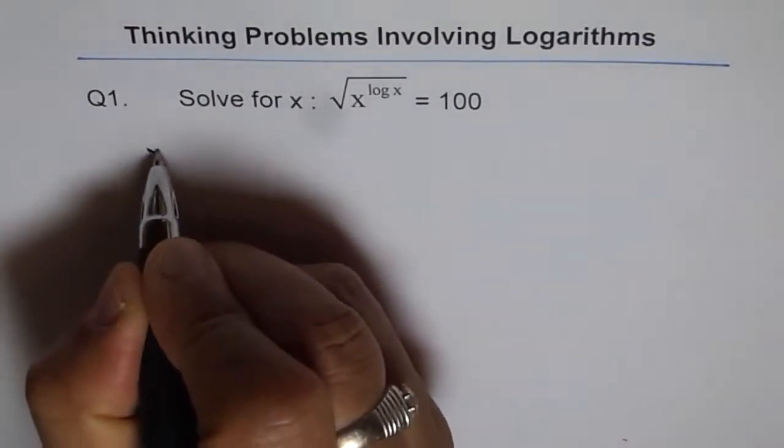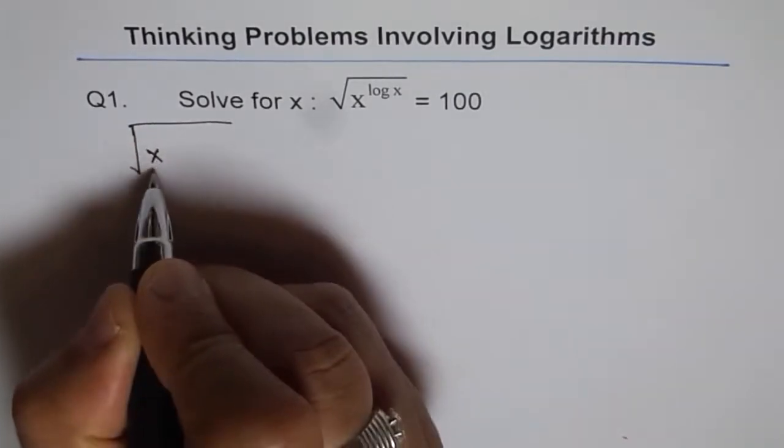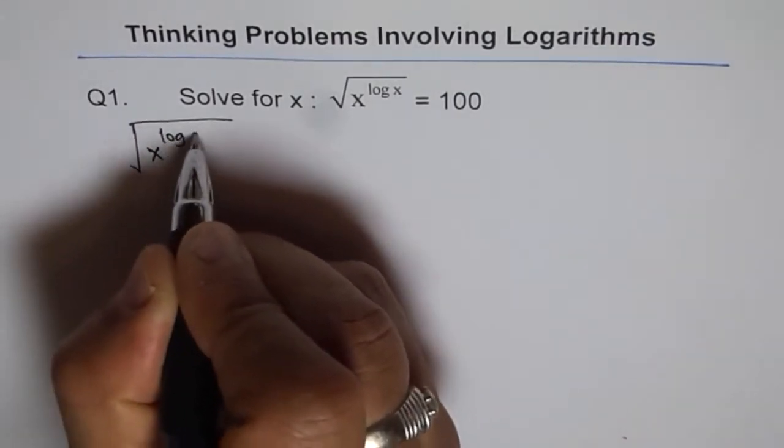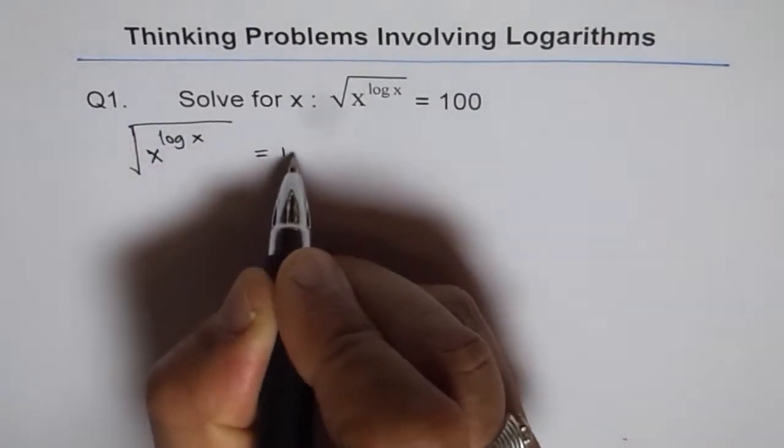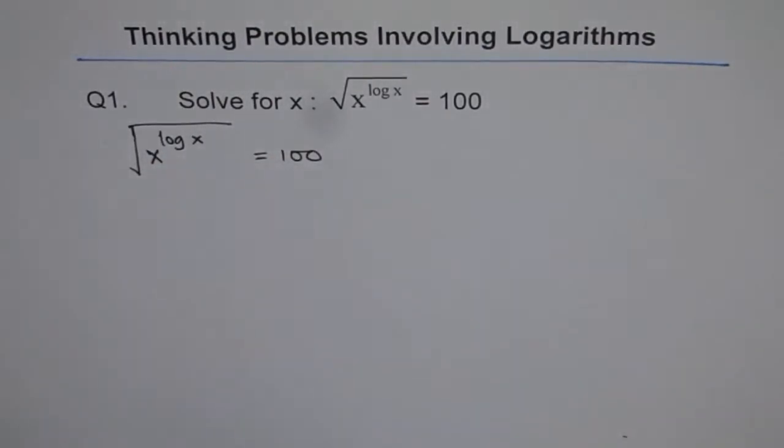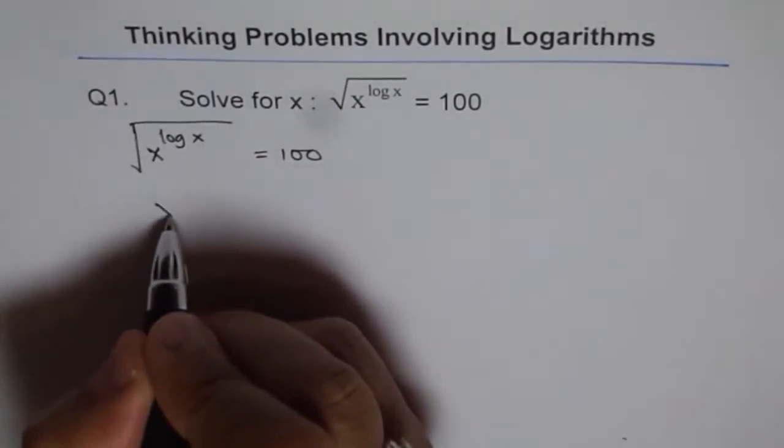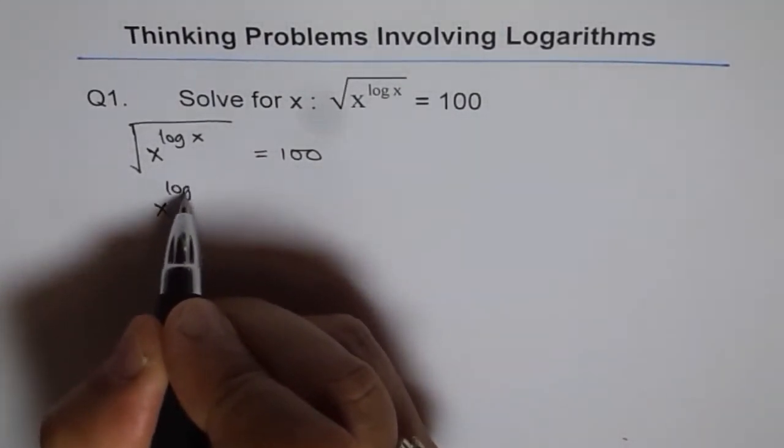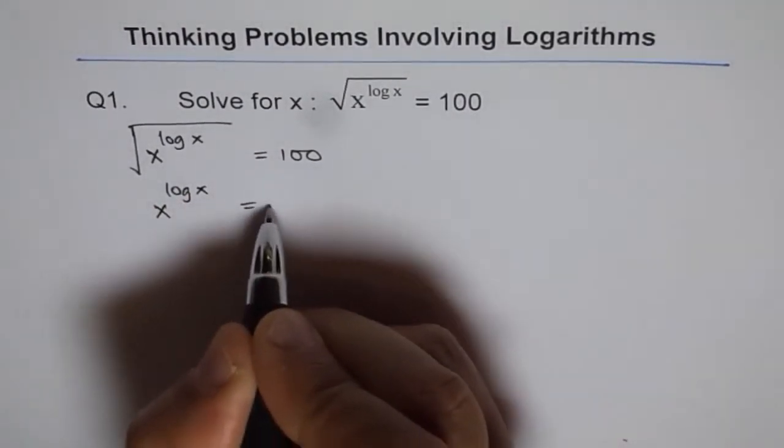We are given square root of x to the power of log x equals 100. When you don't write any base, it is assumed to be base 10. So let's square both sides. We get x to the power of log x equals 100 squared.